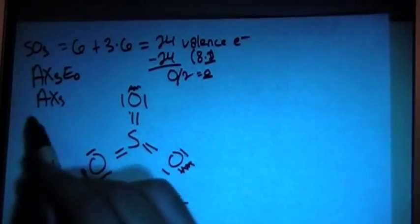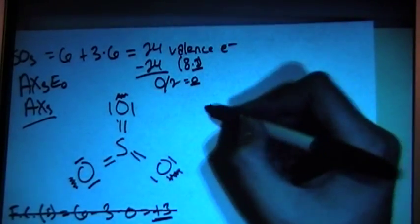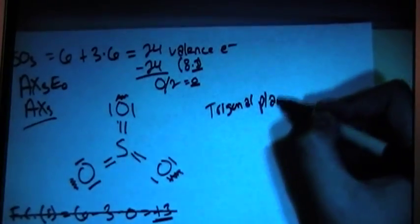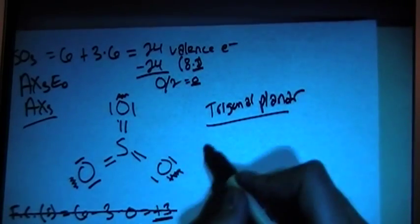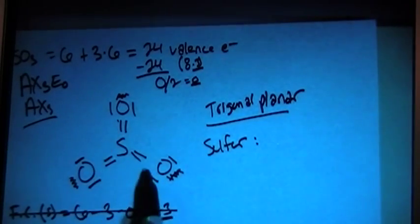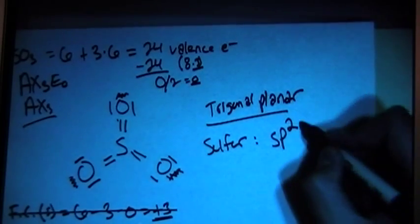So now that it's an AX3 shape, we know that this means this is going to be a trigonal planar shape. And the sulfur, since it has 3 bonding sites, is going to make this an SP2 hybrid.